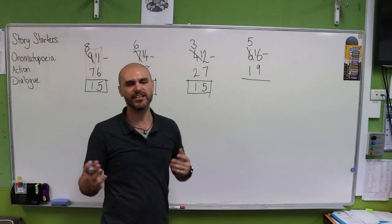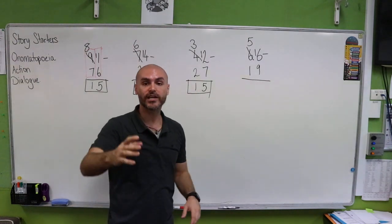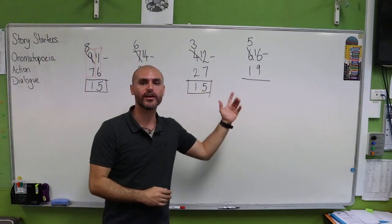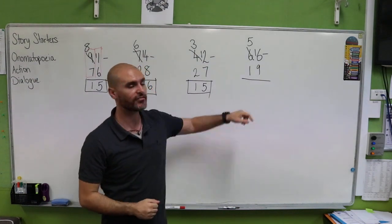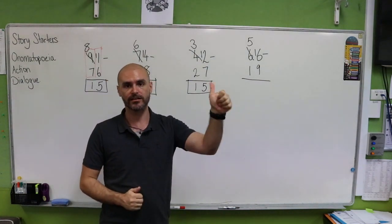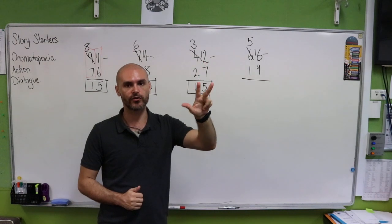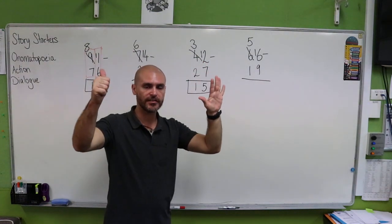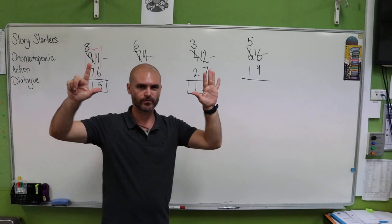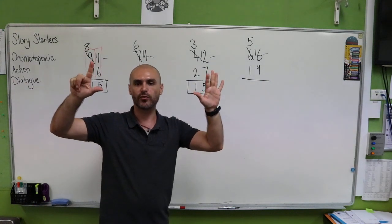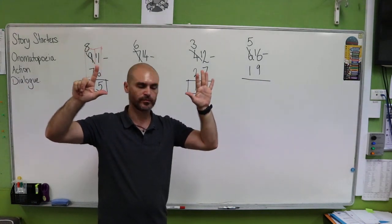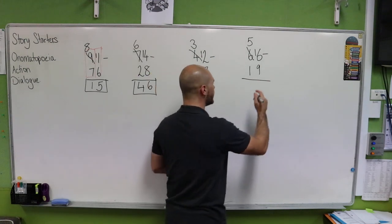Now we have 16 take away nine. So we're going to use our counting skills to see if we can work out the difference. So we have nine, 10, 11, 12, 13, 14, 15, 16. What was the difference? What was our final answer? You're right, it's seven.